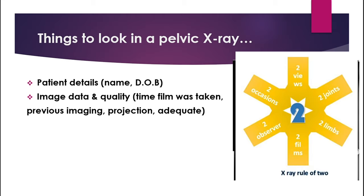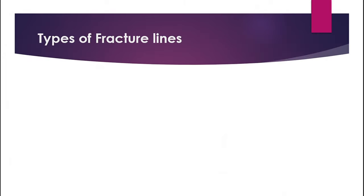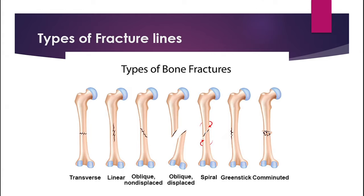Next, you want to comment on the most striking abnormality. Usually at medical school level, fractures are commonly tested. A fracture is defined as the discontinuity in the substance of the bone, usually seen as a lucent line or dark line in the bone. When you see a fracture line, a detailed description will be needed to get you the marks. There are many types of fracture lines in a pelvic x-ray: impacted fracture, spiral fracture, transverse fracture, oblique fracture, comminuted fracture, and many more.